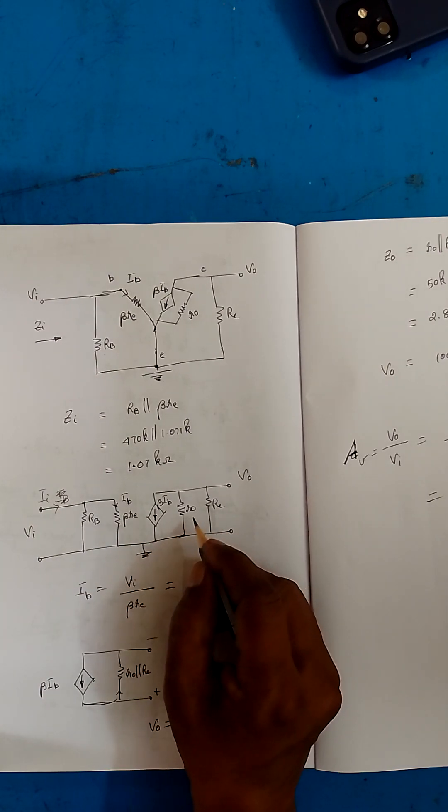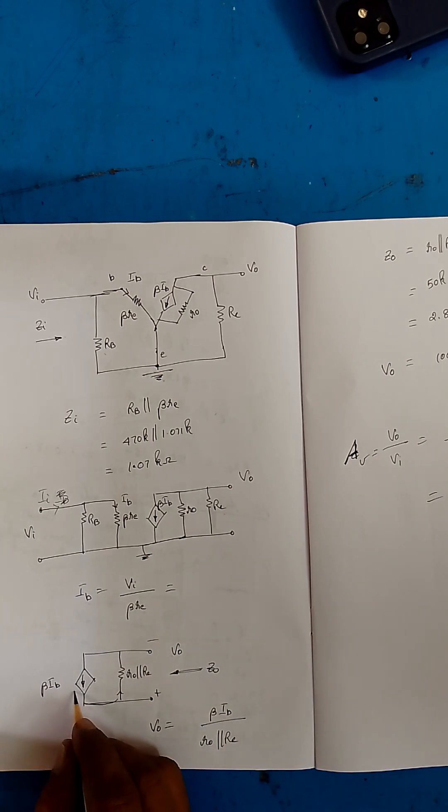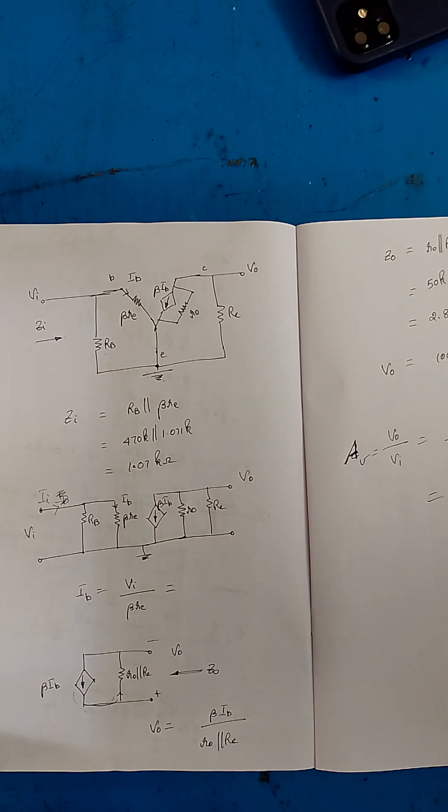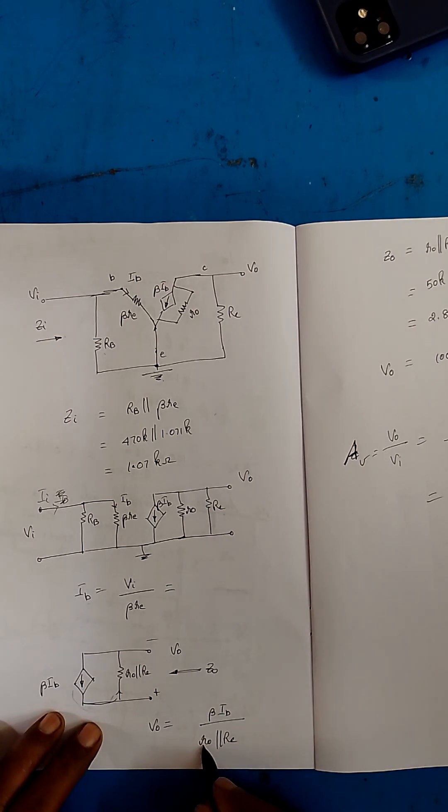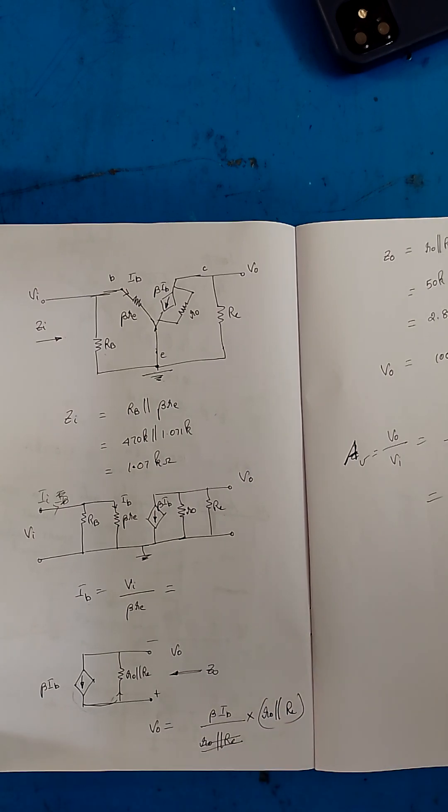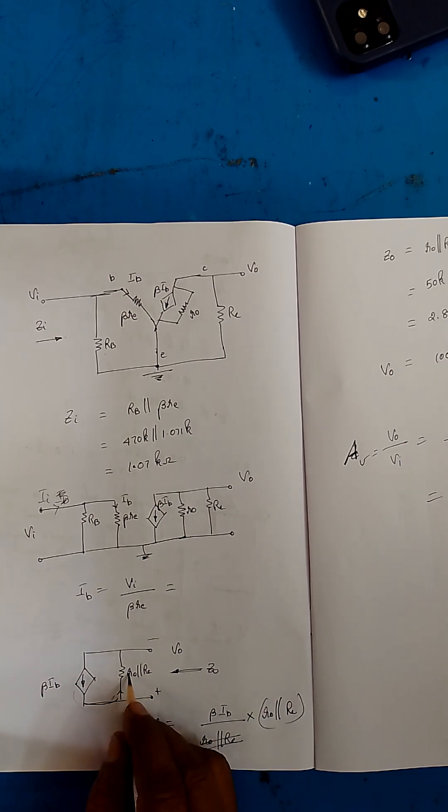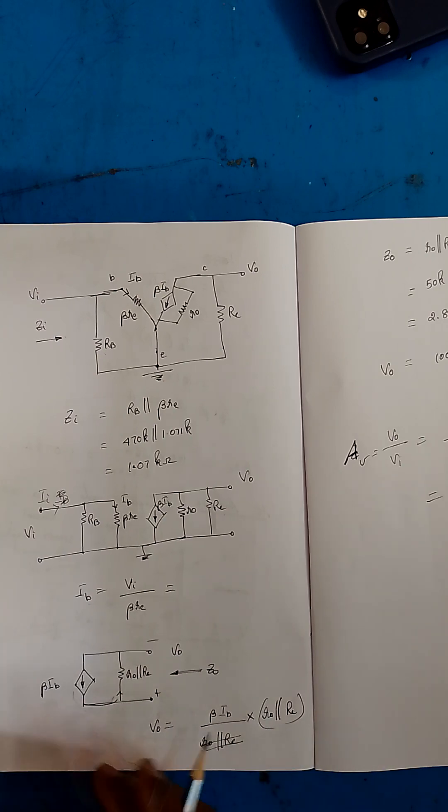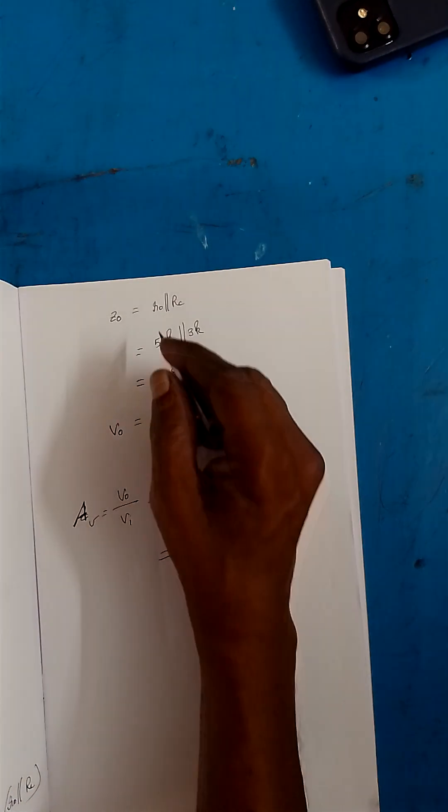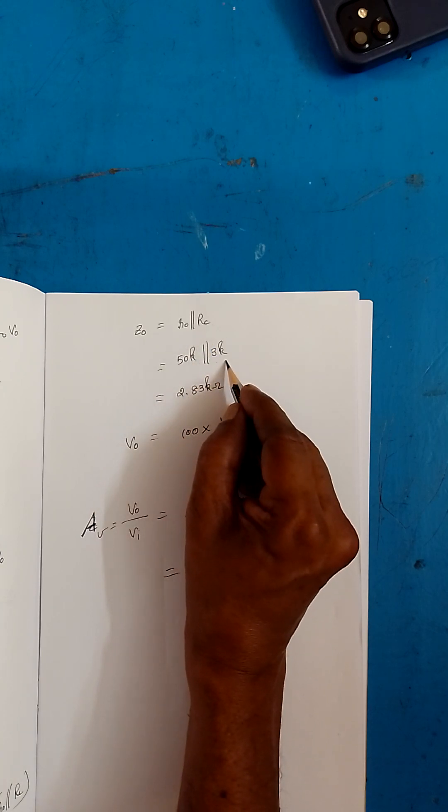Now coming to the output side, this r0 and RC in parallel, that is the output impedance. Now I want V out. V out is what? Beta IB is the current flowing here. Here I have made a mistake: current multiplied by resistance is voltage. So it's beta IB into r0 parallel with RC. Beta IB is the current, current multiplied by the resistance value, or Z0, will give you V out. So now what is Z0? r0 parallel with RC. r0 is given in the question itself, which is 50k, and RC we know is 3k from the circuit diagram. On simplification you will be getting 2.83 kilo ohm.